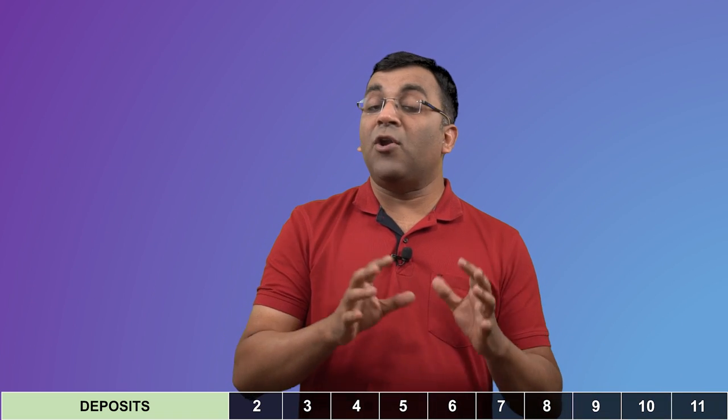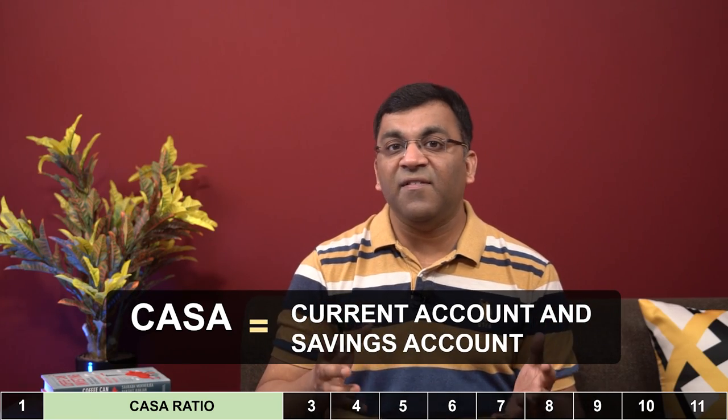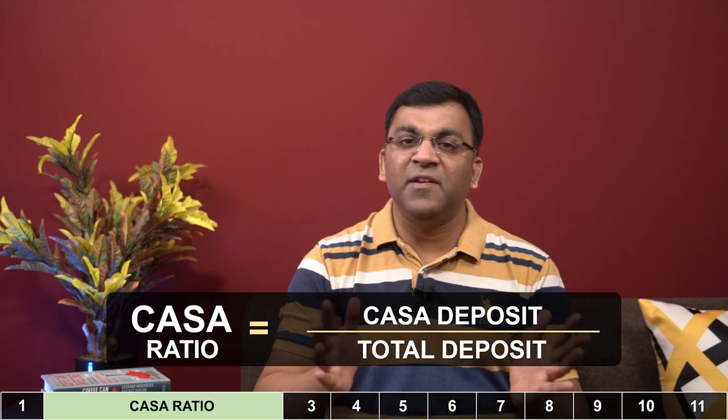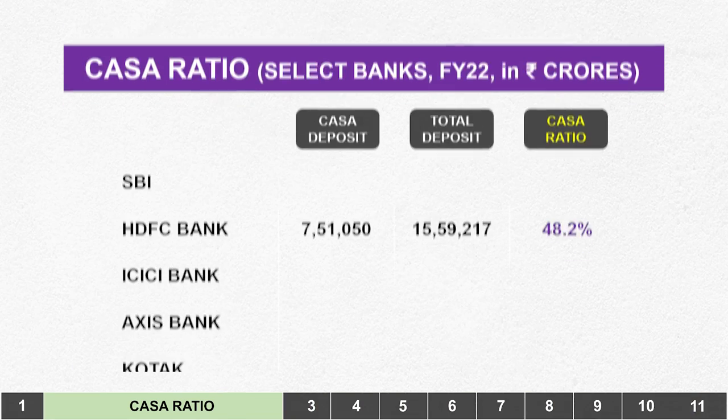But this deposit number cannot be looked at in isolation. An understanding of where this money is coming from has a large bearing on profitability and therefore our evaluation of the bank. For this, we have to study what is called the CASA ratio. CASA stands for Current Account and Savings Account, and the CASA ratio is the money in these accounts as a percentage of total deposits. For example, HDFC Bank in March 2022 had a total deposit base of 15.5 lakh crores.